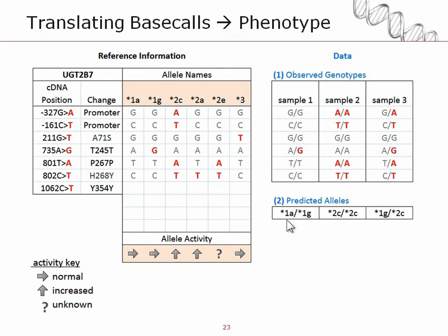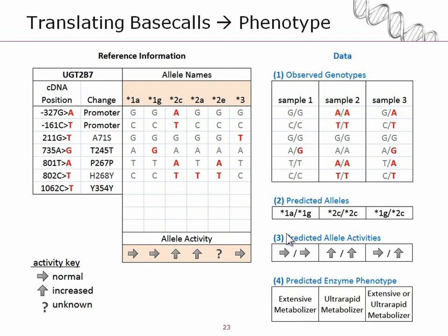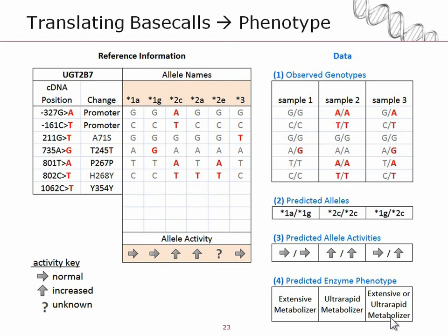For some of the genes for which we do star allele reporting we also report phenotypes. That is done by comparing the predicted star alleles against their known allele activity and coming up with a pair of predicted allele activities. For sample one it would be a pair of two normal activity alleles. For star 2c it would be a pair of two increased activity alleles. And for sample three it would be a combination of a normal allele from star 1g and an increased allele from star 2c. When we see a pair of normal allele activities, DMET console reports that sample as an extensive metabolizer for UGT2B7. For a pair of increased activities that's called an ultra-rapid metabolizer, and for a mix of allele activities like this it's called an extensive or ultra-rapid metabolizer — a single call code that reflects that.